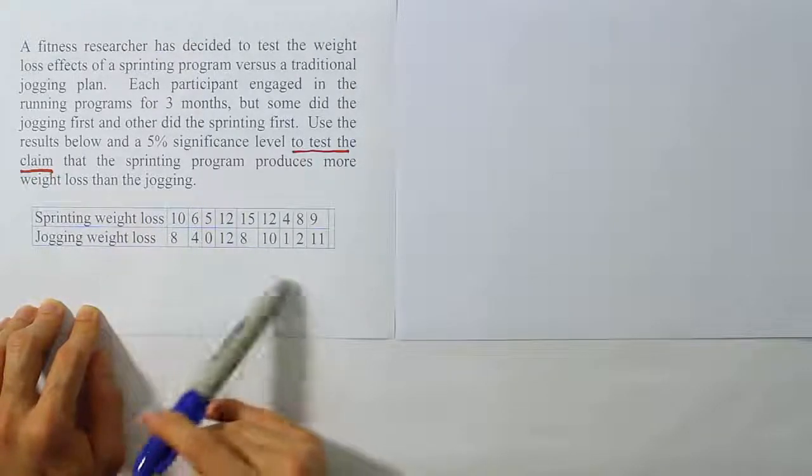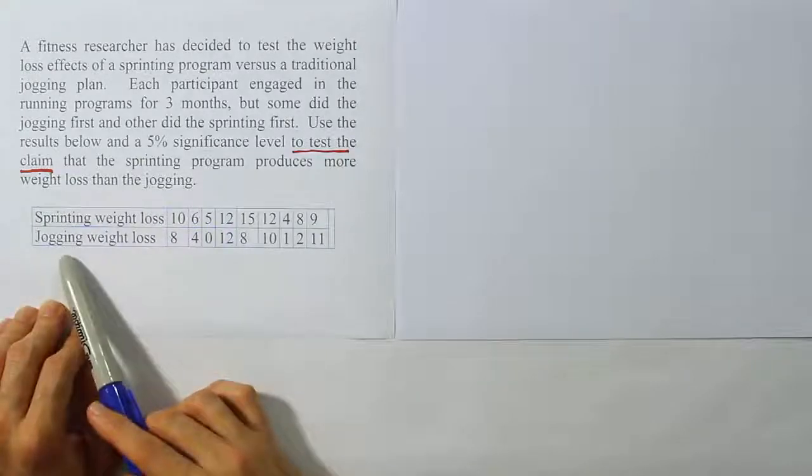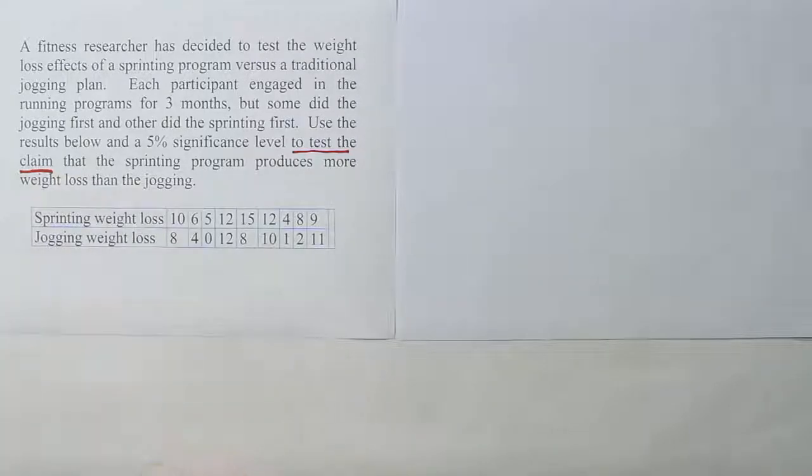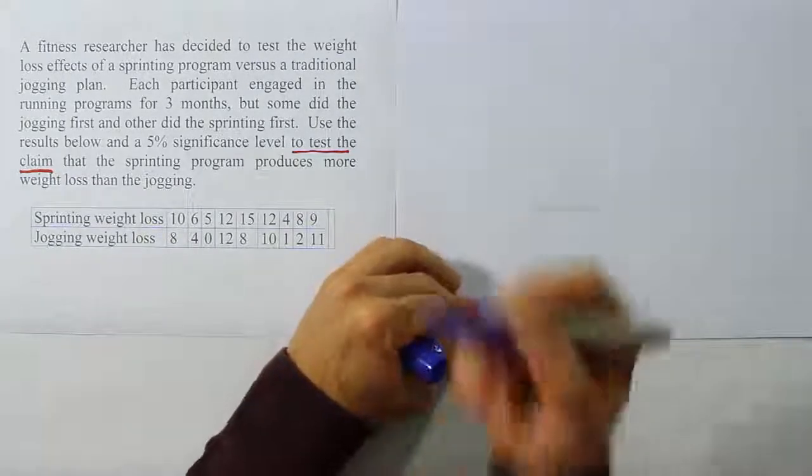The way we're going to do that is to run the dependent t-test by calculating a row of differences and then basing our t-test on that set of differences. So the first thing we want to do then is to express the claim. Let's do that over here.